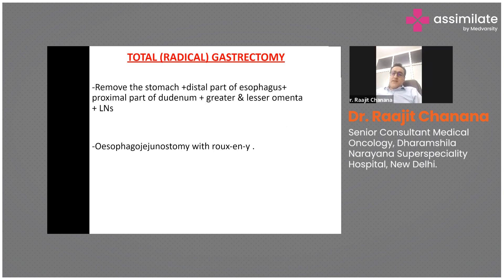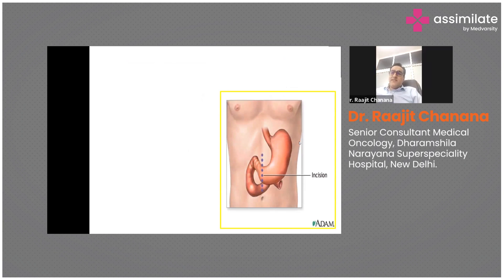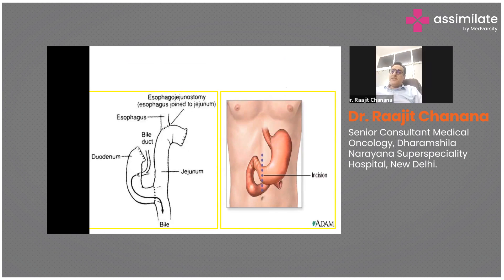For feeding after total gastrectomy, an esophagojejunostomy with Roux-en-Y reconstruction is performed. Once the stomach is removed, the esophagus is connected to the jejunum - called esophagojejunostomy. It is called Roux-en-Y because the duodenal part is sutured and the bile duct is connected, creating a Y-shape. Anastomosis is then created between the esophagus and jejunum.